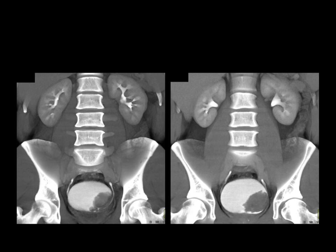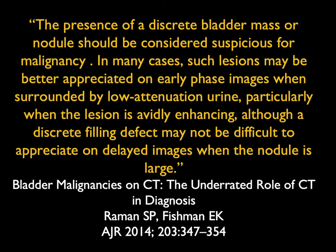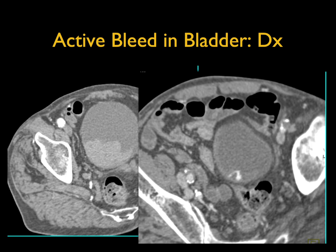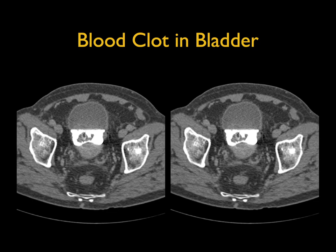Sometimes things are obvious on the excretory phase, sometimes more obvious early. Smaller tumors may only be seen on the arterial phase because on the venous phase you get partial volume averaging and don't really see them, and contrast in the bladder will cover things up. A discrete bladder mass or nodule should be considered suspicious for malignancy. You also need to look at the bladder for high-density hematuria — when you look more carefully, you can see a jet of active bleeding, and on the delayed phase you see blood clots layering in the bladder.